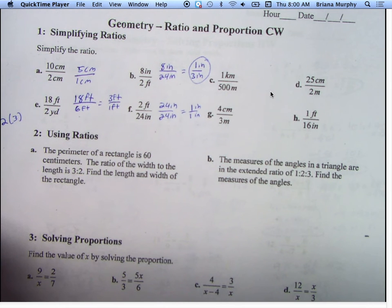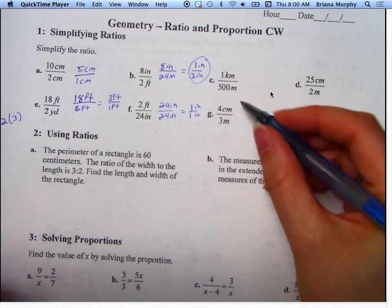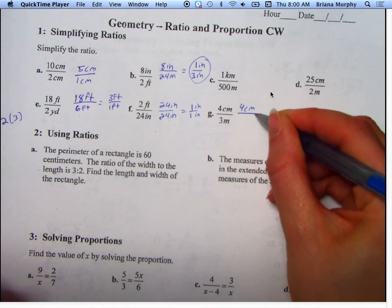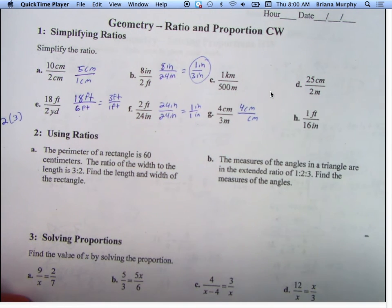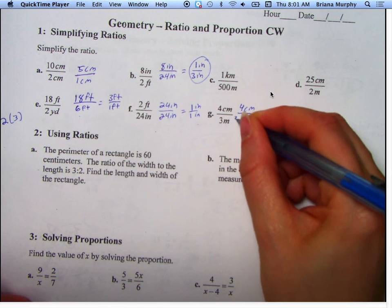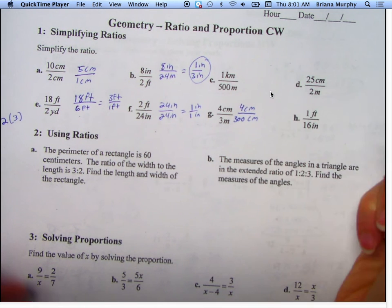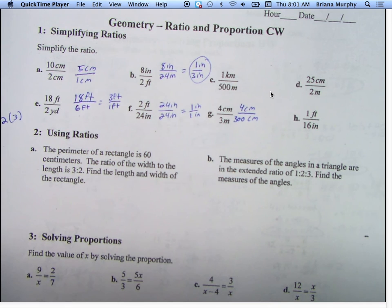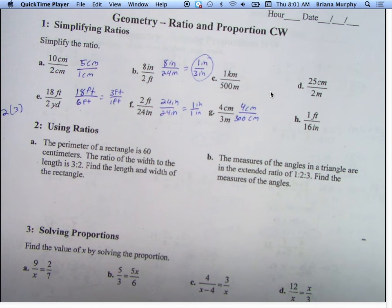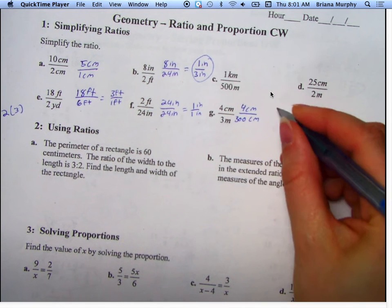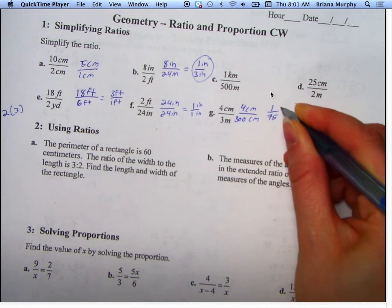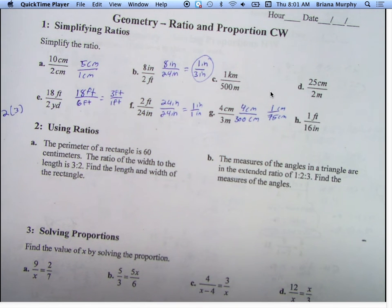How many centimeters are in a meter, guys? A hundred. Okay, so if I have 4 centimeters on top, how many centimeters do I have in the bottom? I have 300, right? Okay, so 4 goes into 300 how many times can I reduce this? I get 1 over 75.